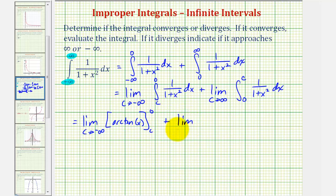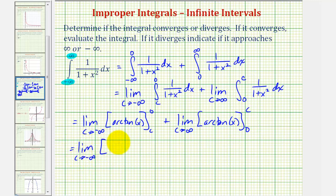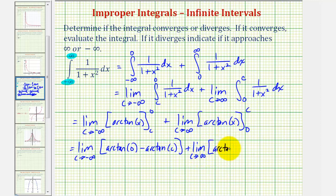Plus the limit as c approaches positive infinity of arc tangent x, with limits of integration from zero to c. This means we'll have the limit as c approaches negative infinity of arc tangent zero minus arc tangent c, plus the limit as c approaches positive infinity of arc tangent c minus arc tangent zero. Notice that arc tangent zero is not affected by c.